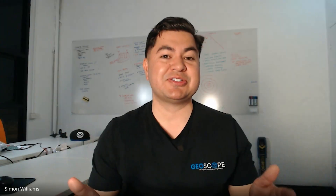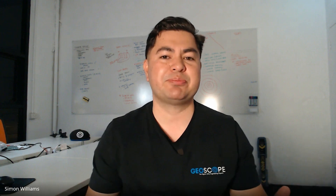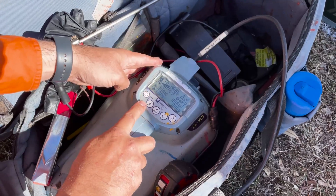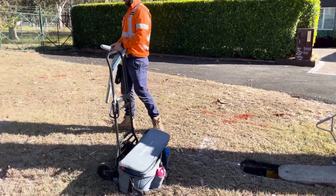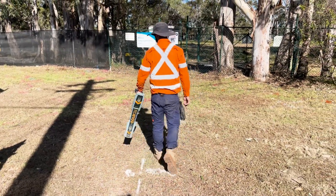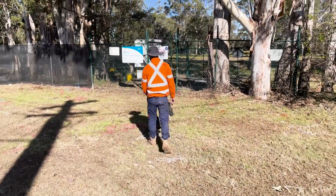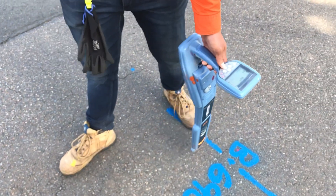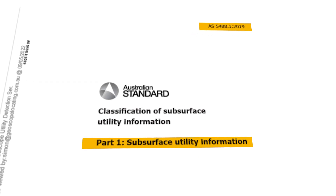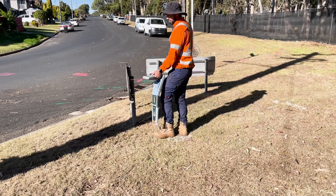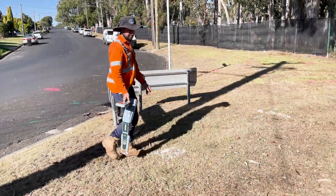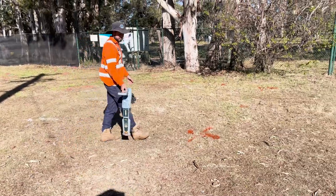Every location we go to requires a strategic process to complete the job efficiently — some jobs are easier than others, and you never quite know what you're going to get until you start scanning. Just because we've located this cable with power mode using a passive locating method doesn't mean we've accurately located the cable. When it comes to the Australian Standard AS 5488, passive locating or power scanning methods are not classified as a Quality Level B (QLB) locating method, as we have not used active locating methods to trace these cables.